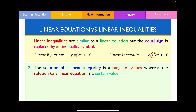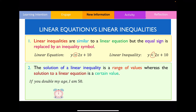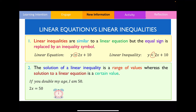Let me show you an example. If I was to double my age, I am 50 — what is my original age? I could construct a linear equation: 2x equals 50, where x is my current age. There's only one particular answer, and that answer is going to be 25. Notice in a linear equation, your unknown variable can only take on one particular value.